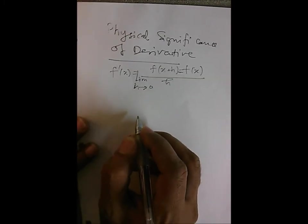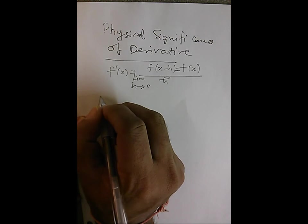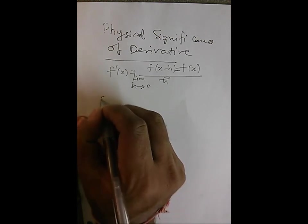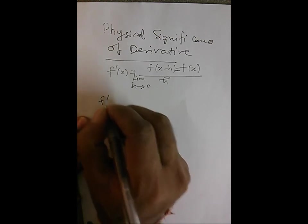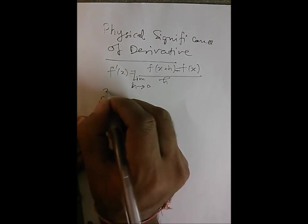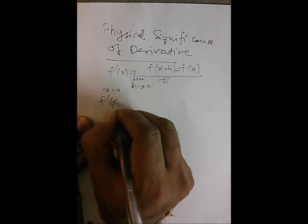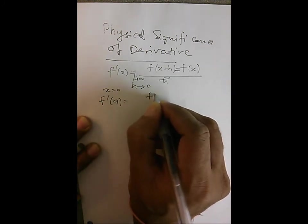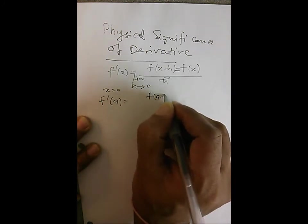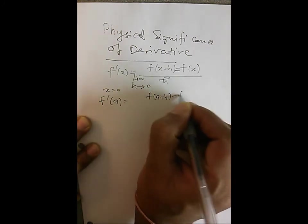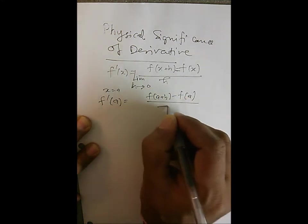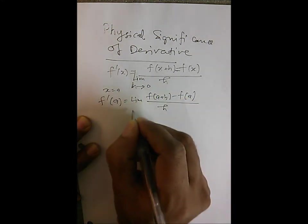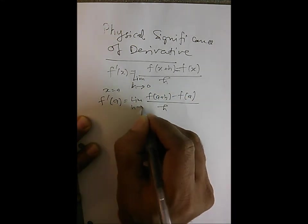Now if we take this derivative and apply it to one particular point, we define the derivative at point x equal to a as f'(a) equal to the limit as h tends to zero of f(a+h) minus f(a), divided by h.